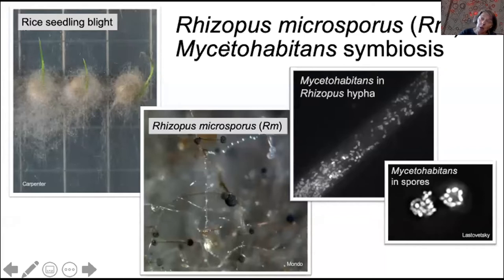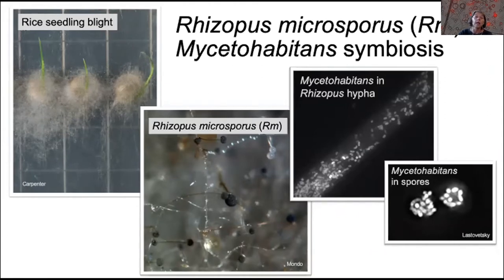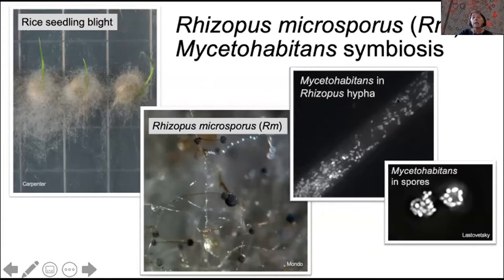Mycetohabitans was formerly known as Burkholderia. It is a beta proteobacterium. It is a pathogen of rice, causing rice seedling blight. It harbors endosymbionts, although sometimes it doesn't.